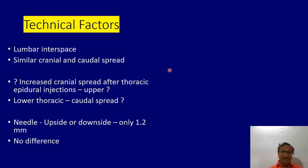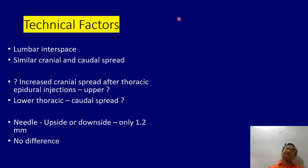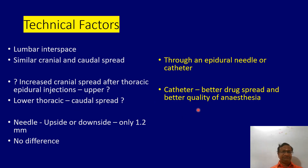At the lumbar interspace, spread is similar cranially and caudally. However, upper thoracic epidural injections show increased cranial spread, while lower thoracic injections show more caudal spread. For example, at T4–T5 with 6 ml, about 3.5 ml may go up and 2.5 ml down; but at T9–T10, 3.5 ml tends to go downward. Regarding needle direction and catheter use, a catheter gives better drug spread and better quality of analgesia — these are important technical factors influencing epidural dynamics.